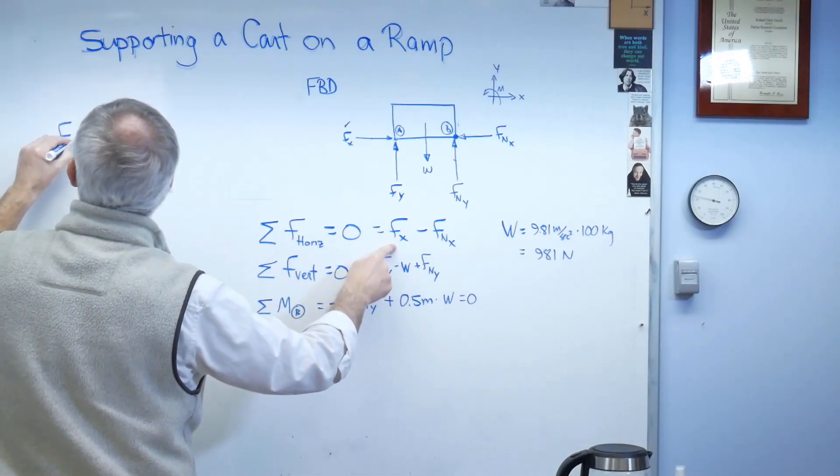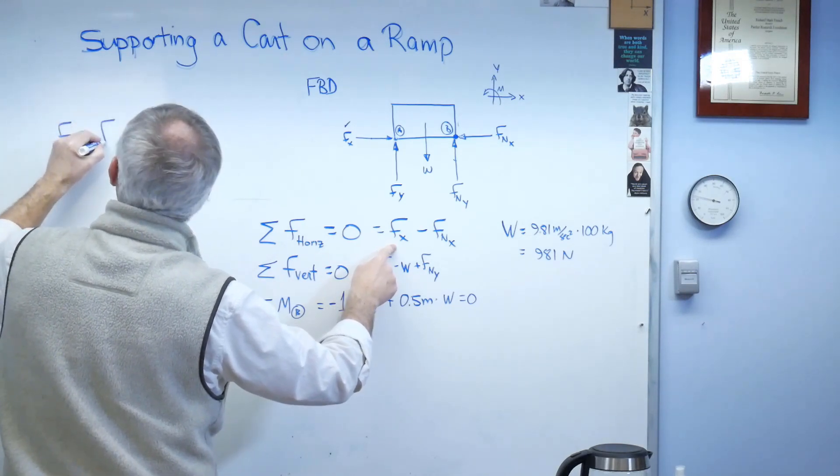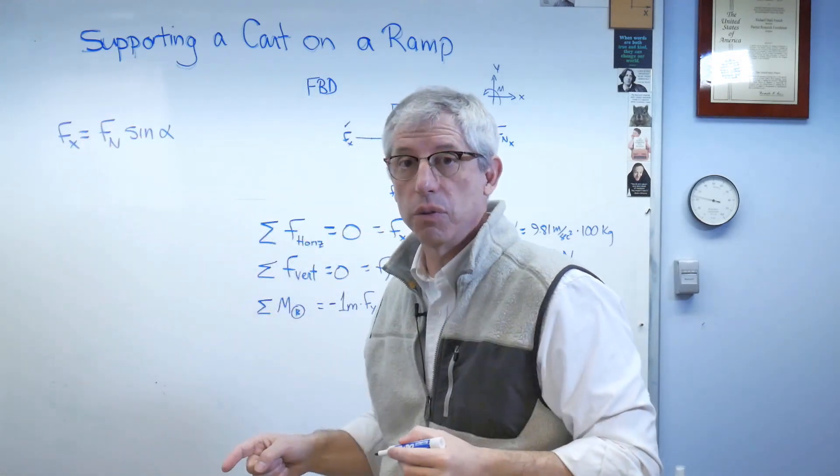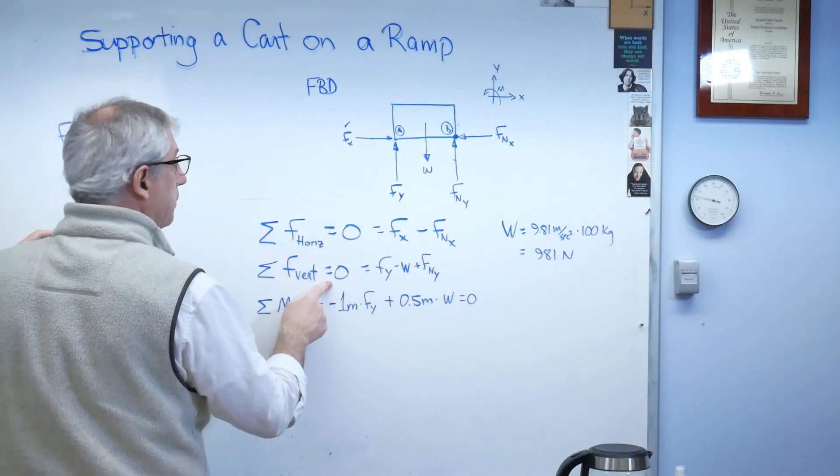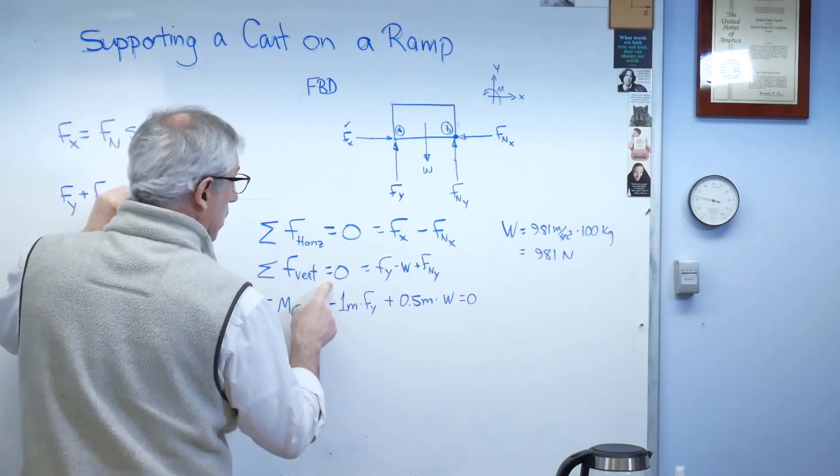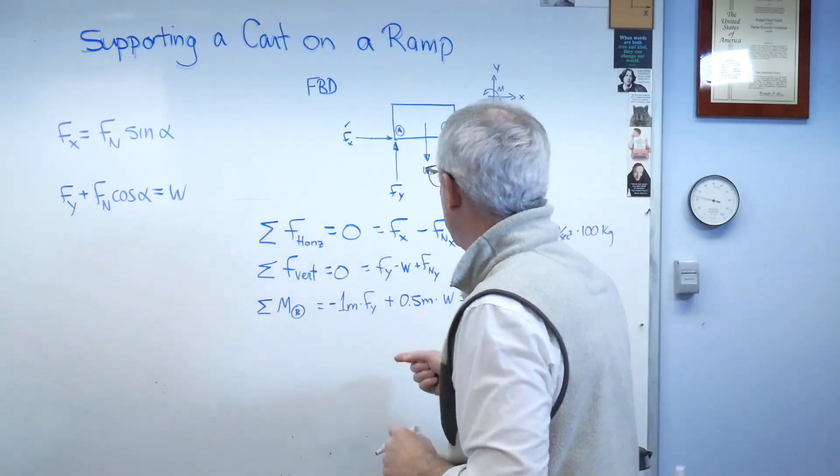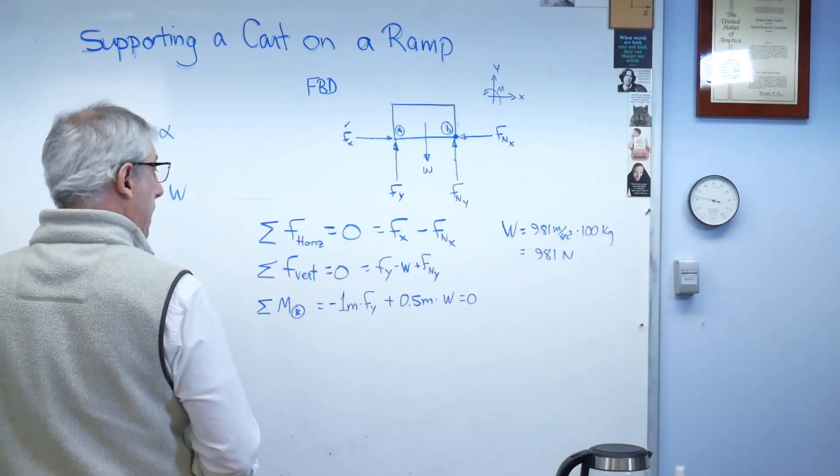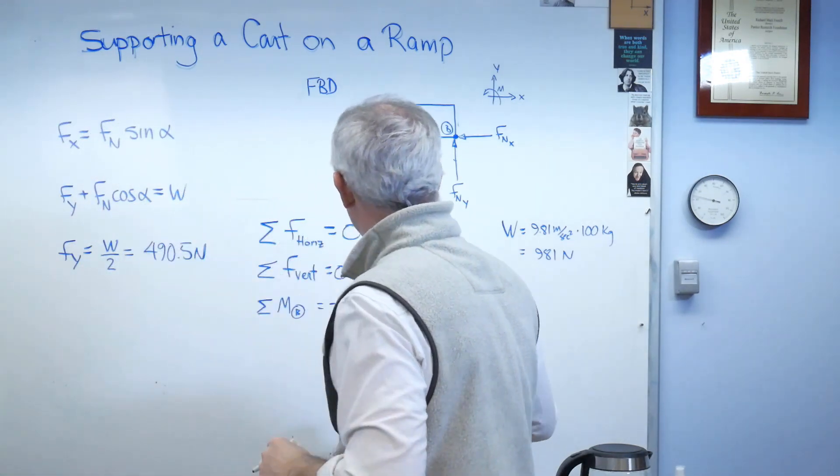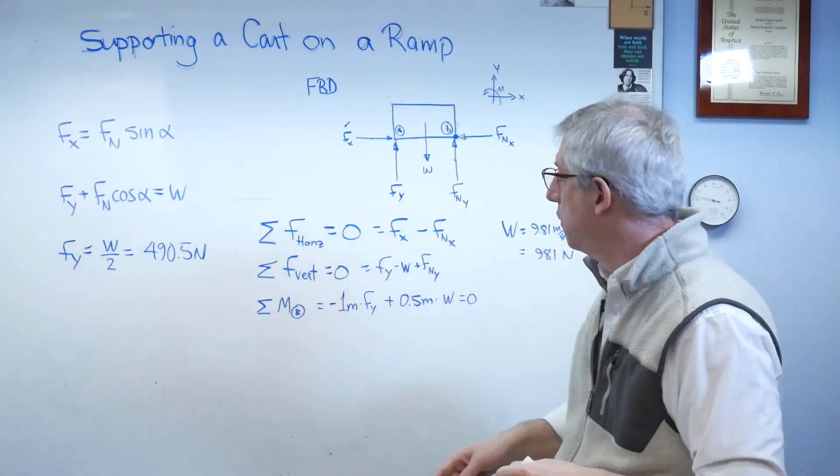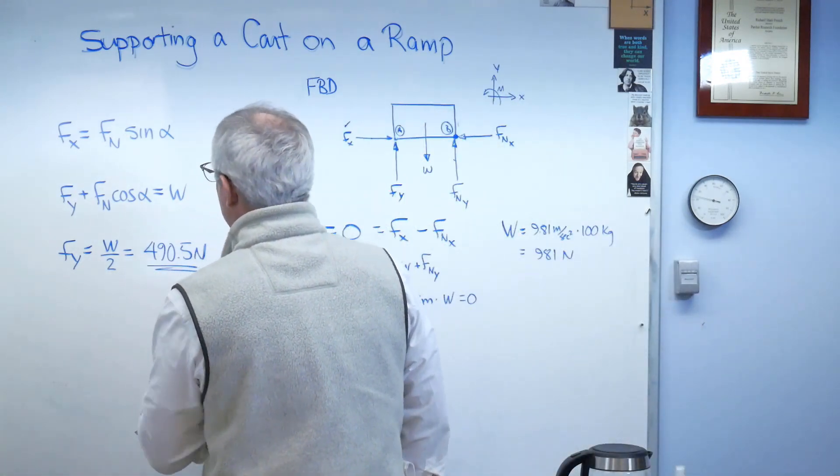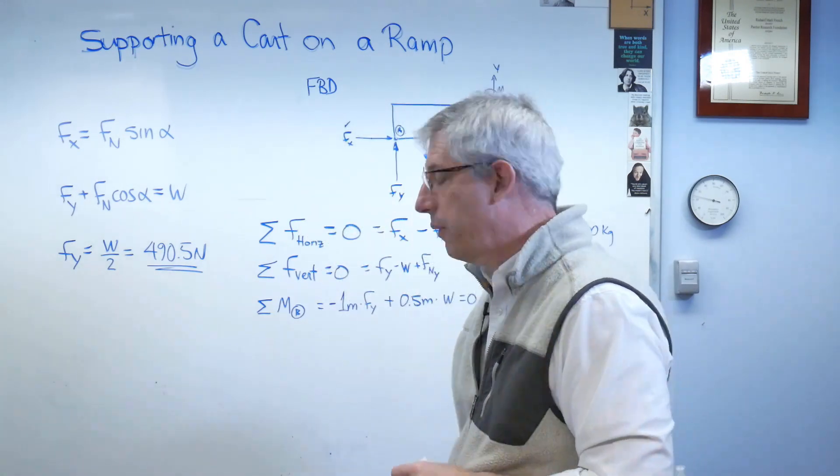So let me get rid of this and get rid of all this stuff. Let's see, F_x, I really don't know what F_x is, so there's F_n and that's going to be sine alpha. So there's one equation. Next equation. Okay, there's my next equation and my last equation here. Because W is 981, half of that is 490.5. So F_y equals that. So I've already solved for one of them.